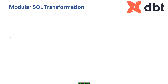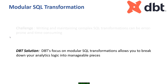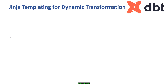Modular SQL transformation is a very important feature of dbt. Writing and maintaining complex SQL transformations can be error-prone and time-consuming in traditional systems — lots of lines of code across many SQL files makes it very hard to identify errors. dbt focuses on modular SQL transformation, allowing you to break down your analytics logic into manageable pieces. This improves code organization and enhances reusability and maintainability.